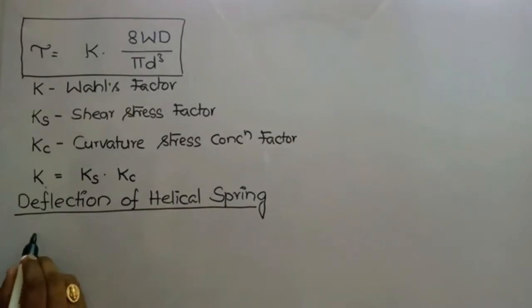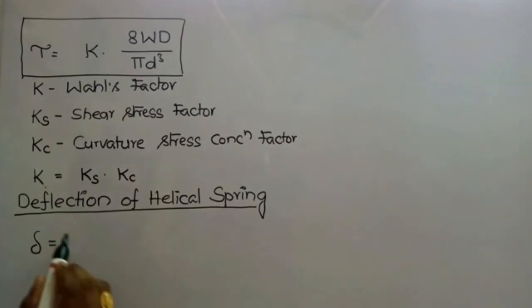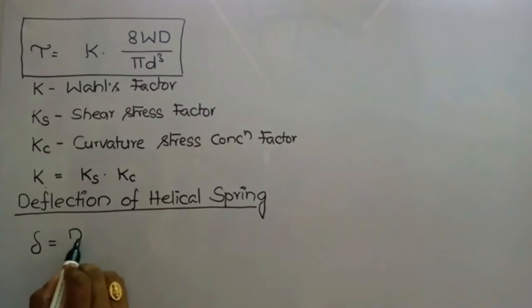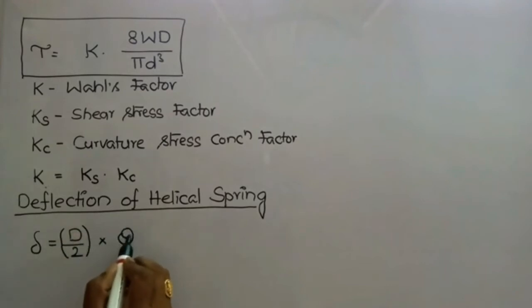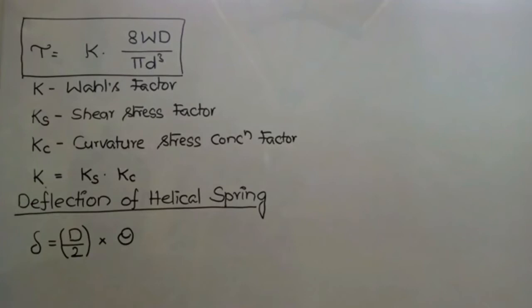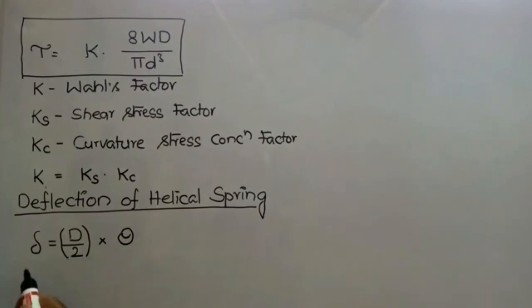The deflection delta is equal to the radius of the coil multiplied by the angular deflection theta. The diameter of the coil is D, so the radius is D/2. Since the helical spring consists of n number of coils, each coil is subjected to some deflection. You find the angular deflection theta, then multiply by the radius r to get the linear or axial deflection. This is derived from the arc length formula: l = r × theta.